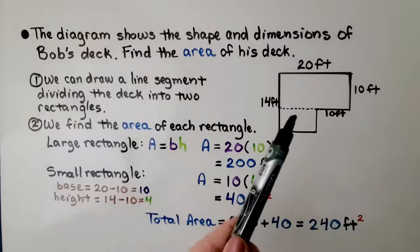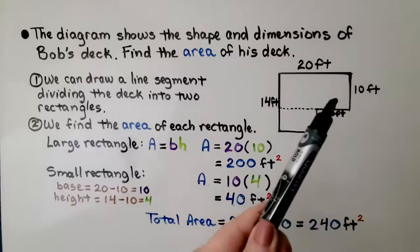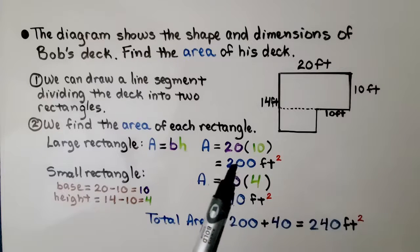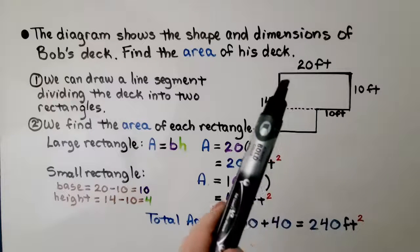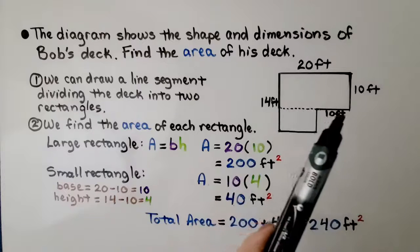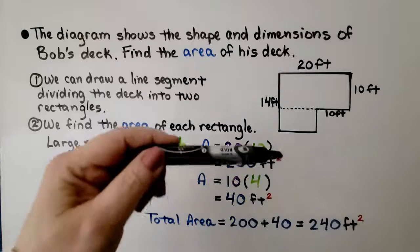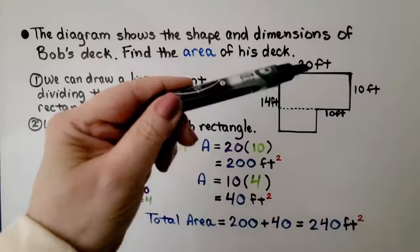We have a large rectangle and a small rectangle. We can use the dimensions 20 feet by 10 feet for the large one. It's 200 feet square. And for the small one, if that's 20 feet and that's 10 feet, well then that must be 10 feet. Because together, this line and this line should equal that line.